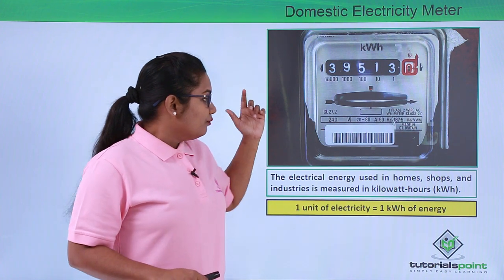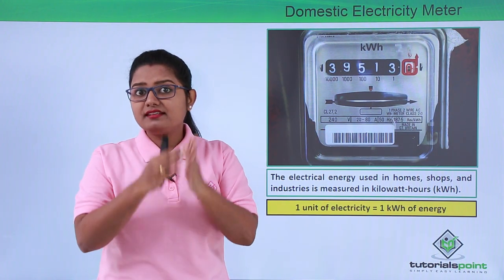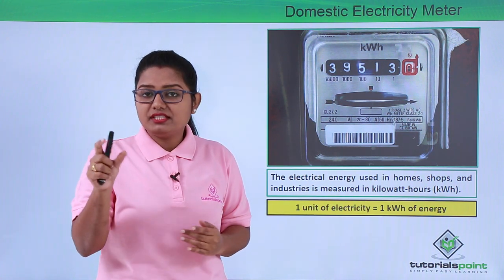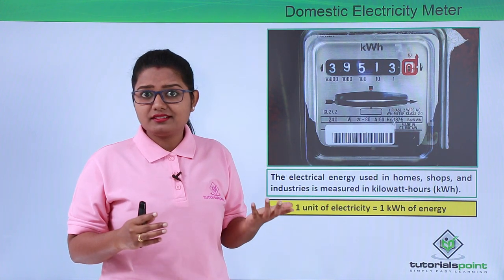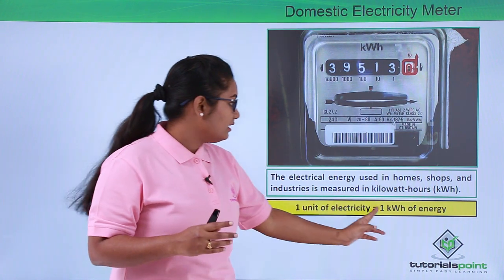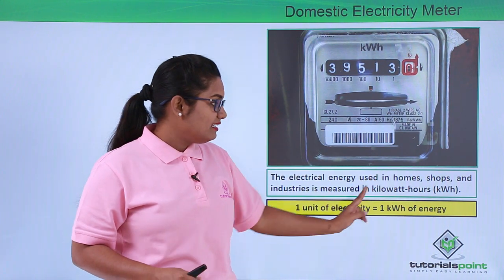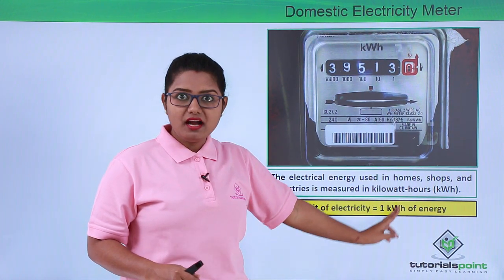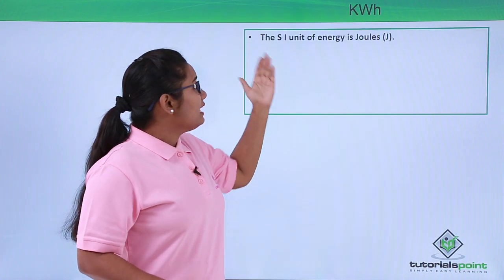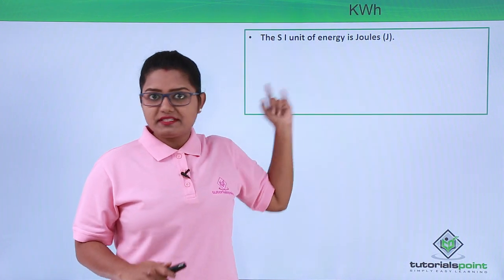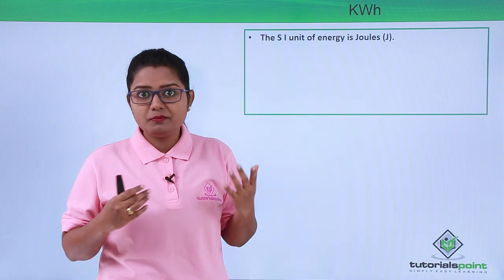We generally get an electricity bill where it is written as the number of units of energy consumed. One unit of electricity equals 1 kWh of energy. Now, since the SI unit of energy is joules, why do we need a separate unit for commercial purposes?